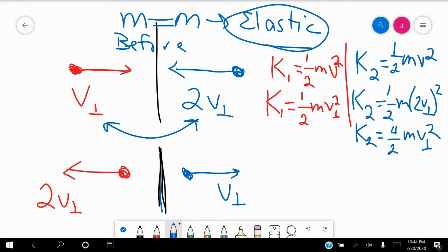and so that tells us that there's going to be four over two mV perpendicular squared. We're going to leave this as four over two because then it's going to help us with some other things later.